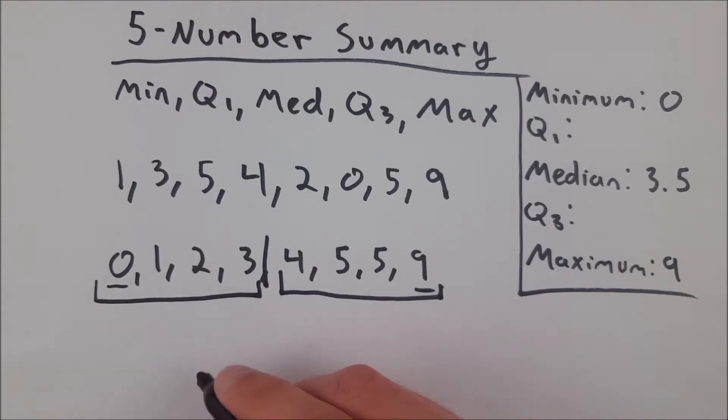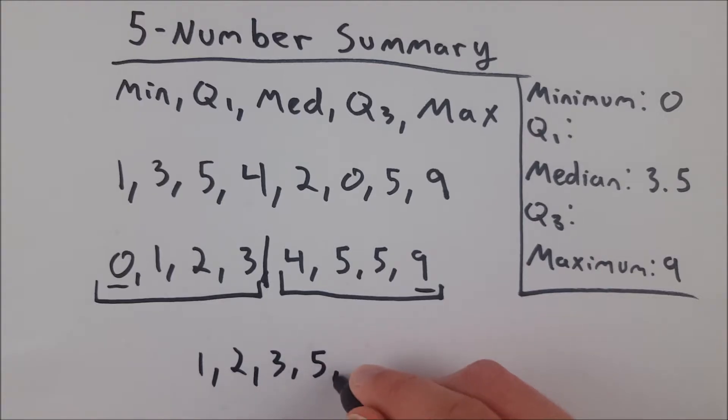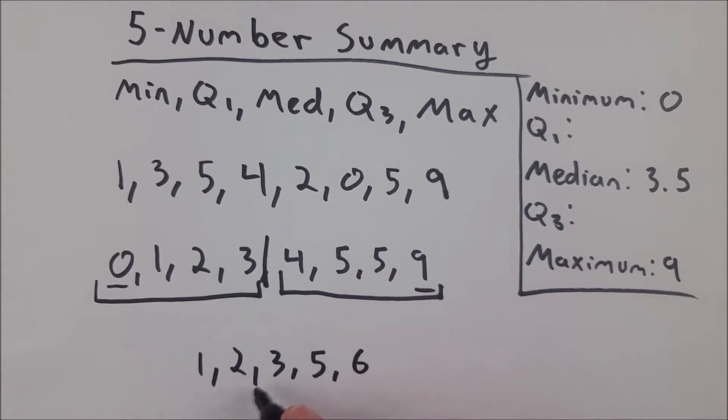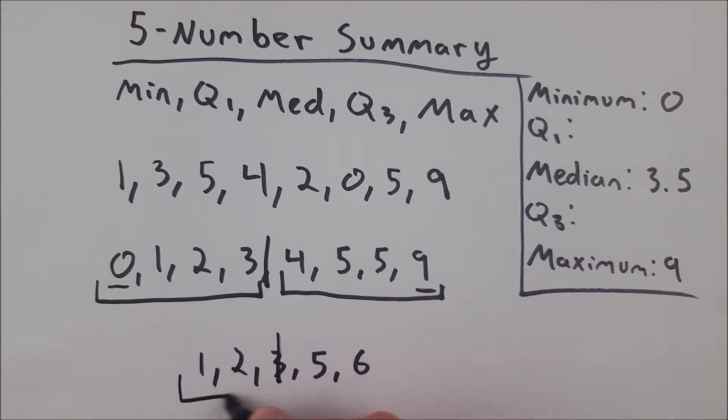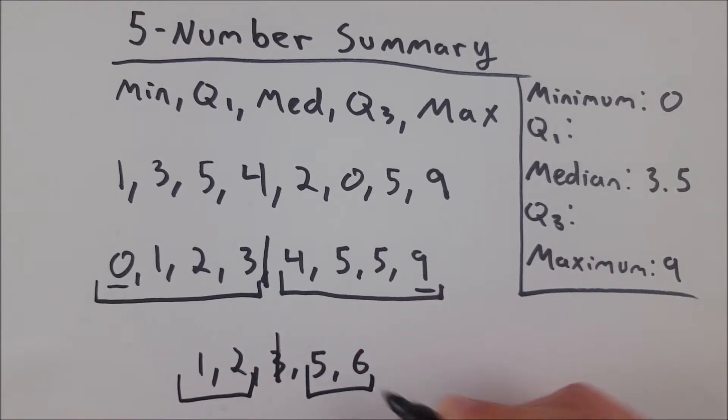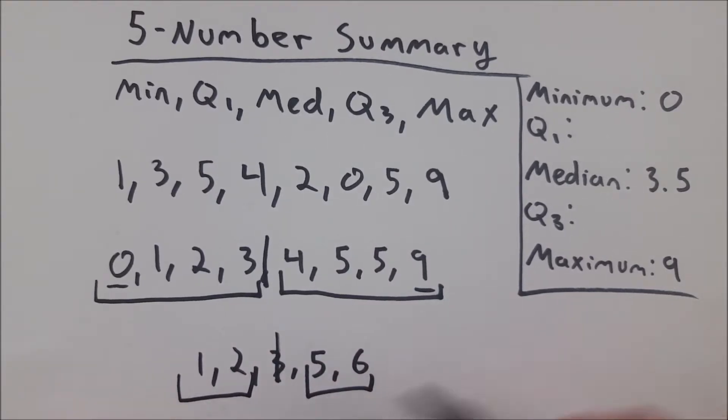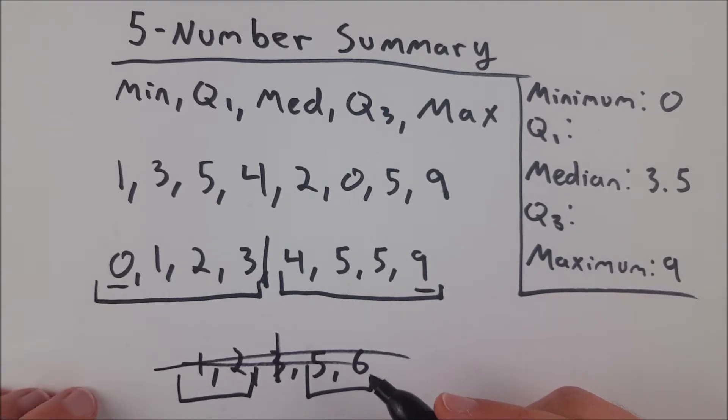Let me write out an example of that real quick. Let's just say we have 1, 2, 3, 5, and 6. Then our median would be 3. And we would split the data right there. And we'd look at these two pieces to find the first and third quartile. But that's not what we're dealing with. But I just want to mention that so you know what to do in that case.